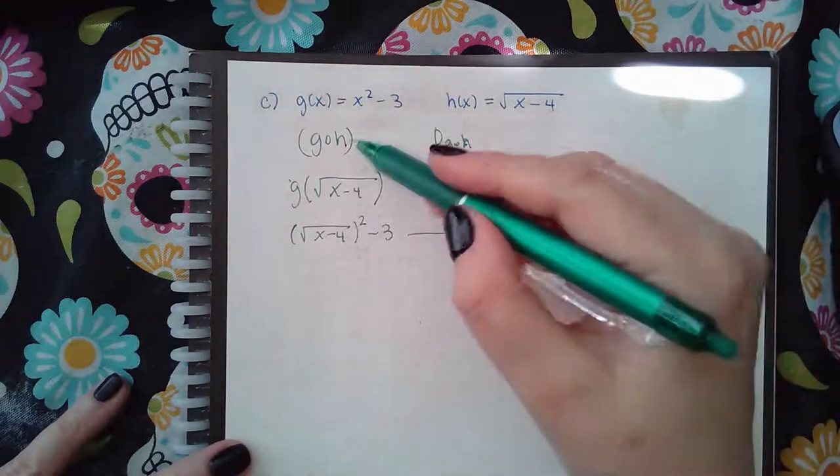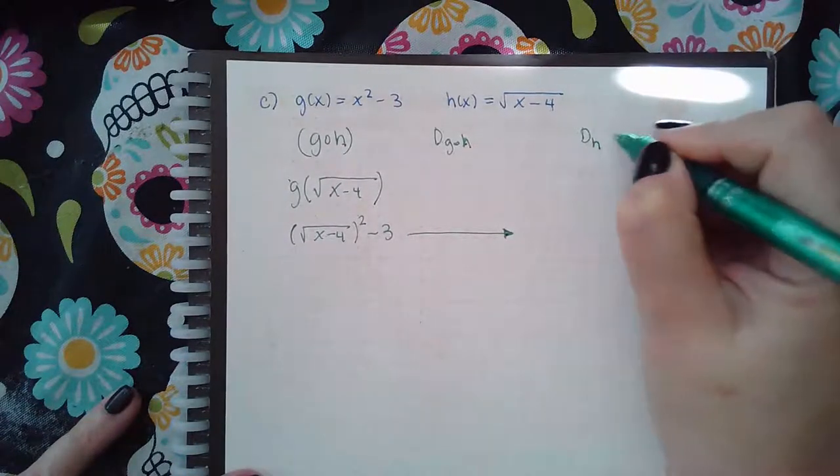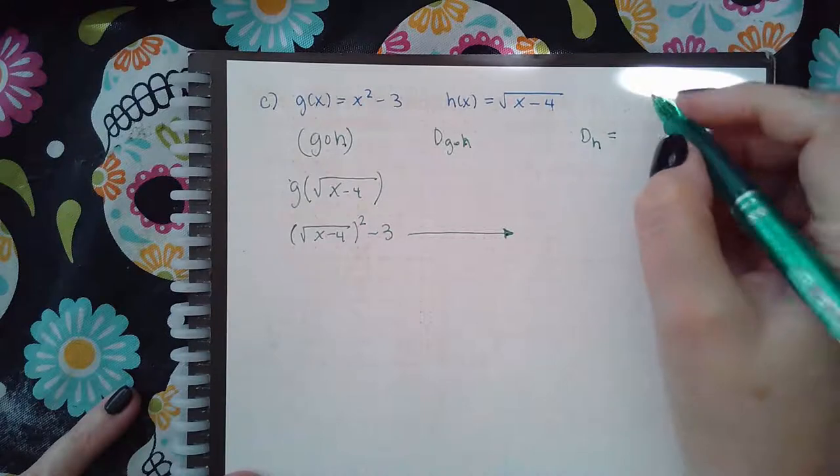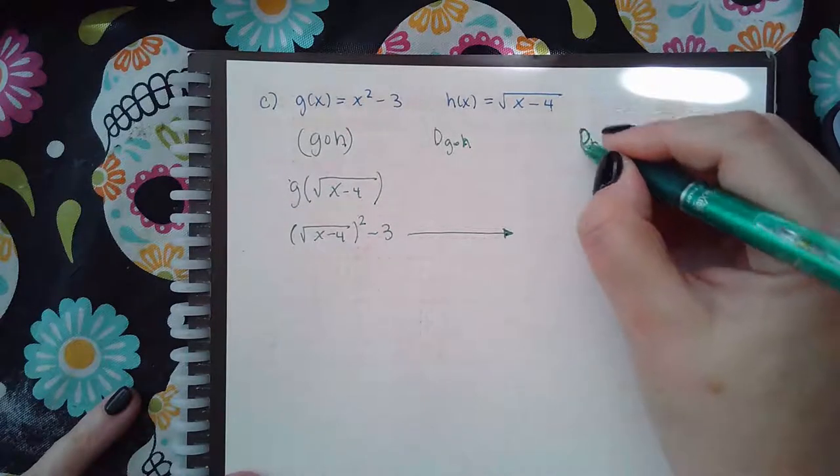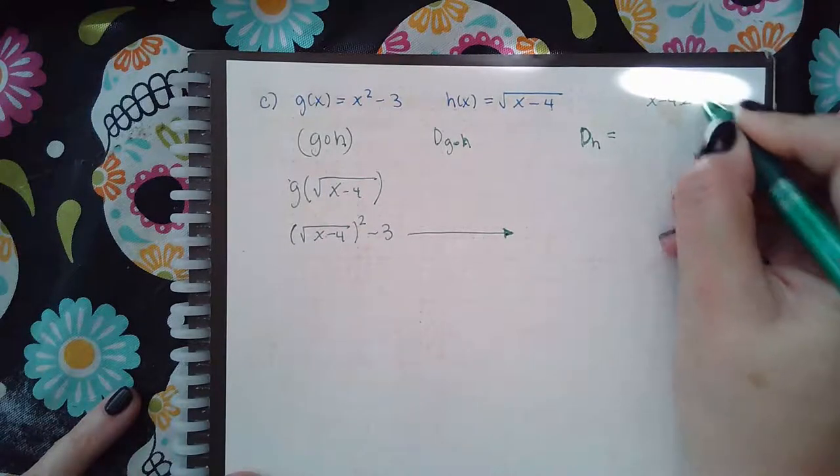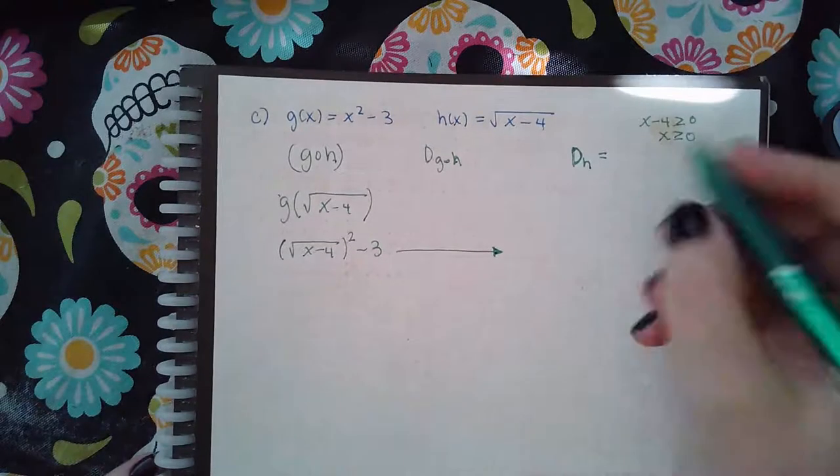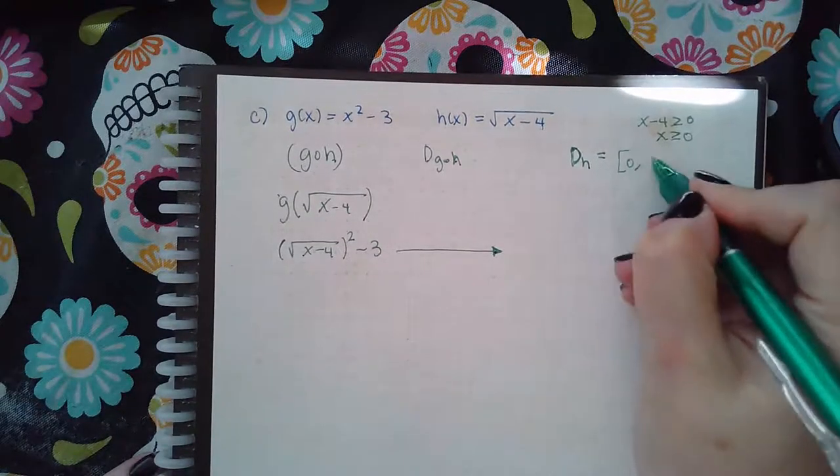So the inside function is h. So then what is the domain of h? The domain of h is going to be from wherever x minus 4 is greater than or equal to 0. So when x is greater than or equal to... So that means from 0 to infinity.